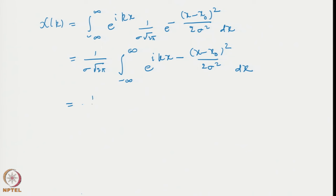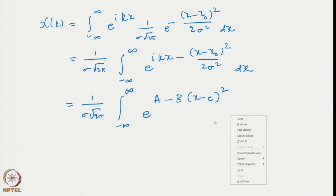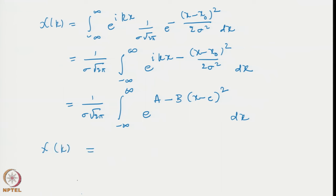We can make it a perfect square — writing it as some constant times e^(a(bx − c)²) — where c will involve ik and b will involve σ² as well. We will skip the details of derivation. When we do that and use the standard Gaussian integral result, we can easily show that the characteristic function of a Gaussian distribution is also a Gaussian. That is the main result: it has the form e^(ix_0 k − k²σ²/2).